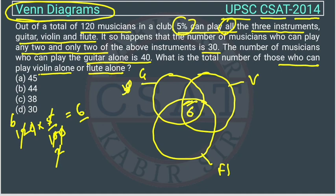Guitar alone is this area, and it is given as 40. In these kinds of problems, we label the regions: A is guitar alone, B is violin alone, C is flute alone, D, E, and F represent the two-instrument overlap regions, and G is the center where all three overlap. G is given as 6 and A is given as 40.